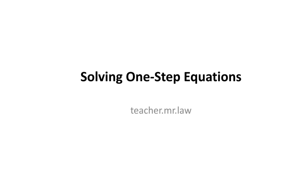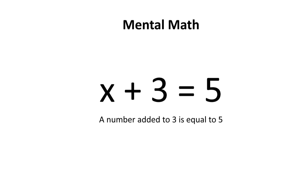In today's lesson, we'll be learning how to solve one-step equations. A number added to 3 is equal to 5. In other words, x plus 3 equals 5. What could this number be? Using mental math, you might have figured out this number to be 2, since 2 plus 3 is equal to 5. However, these are friendly numbers. What happens if they are unfriendly, like big numbers or negative numbers?